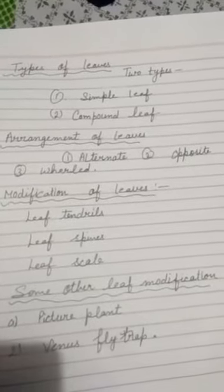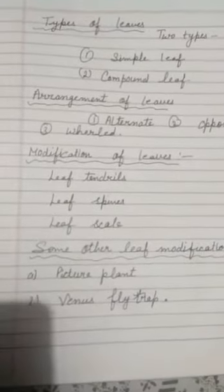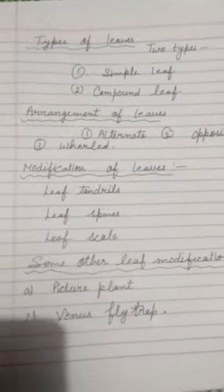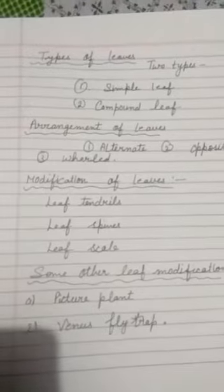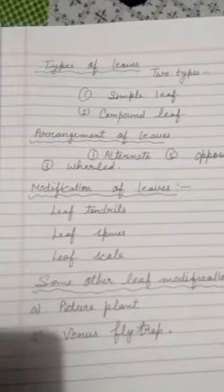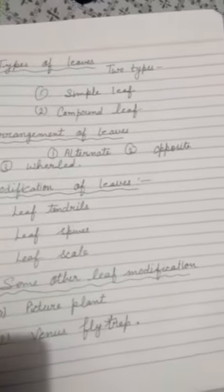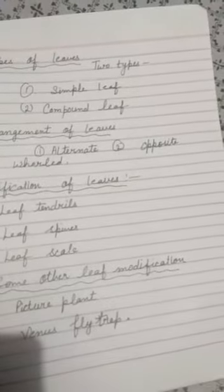Venus flytrap is another insectivorous plant that has its leaves modified to capture and digest insects. The lamina is divided into two parts with the edges of both parts having long pointed hairs. The mid-rib of the leaf acts as a hinge. When an insect comes into contact with the leaf, the leaf closes and insects get trapped inside. The digestive juices then digest the insects.